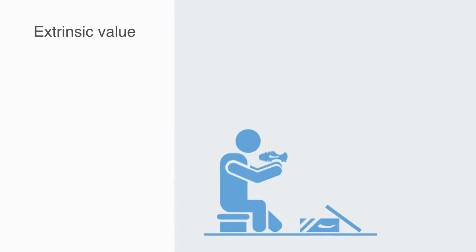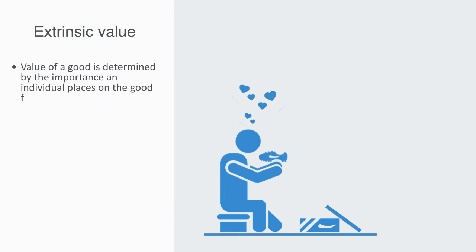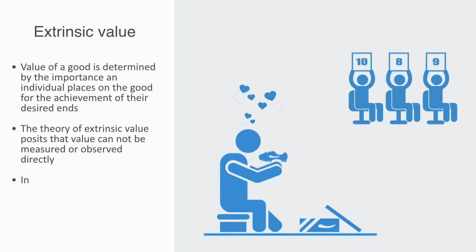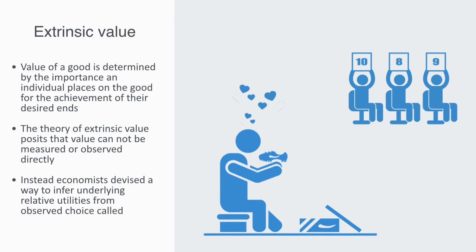The theory of extrinsic value, also called the subjective theory of value, is a theory which advances the idea that the value of a good is determined by the importance an acting individual places on a good for the achievement of his or her desired ends — what is called utility. The theory posits that value cannot be measured or observed directly, so economists derived a way to infer underlying relative utilities from observing choices, called revealed preferences.